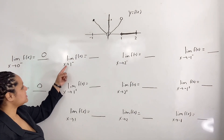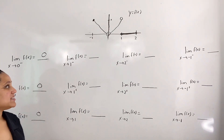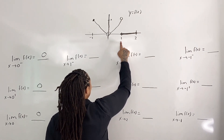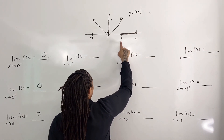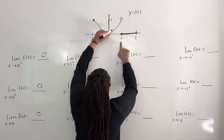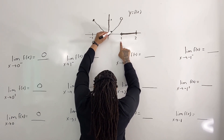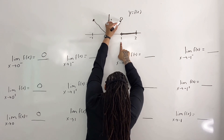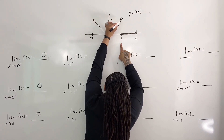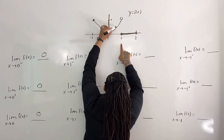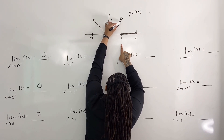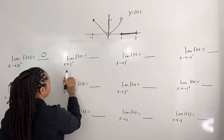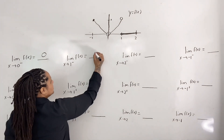Next we evaluate the limit as x approaches 1 from the left. I'm going to place one hand by x equals 1 so that I know where to observe the graph horizontally. Then I will place the other hand to the left of x equals 1, but somewhere on the graph. Then I will travel the graph from left to right until my hand is almost in vertical alignment with the first hand. We see that as x approaches 1 from the left, the y value approaches 1. So the limit as x approaches 1 from the left is 1.